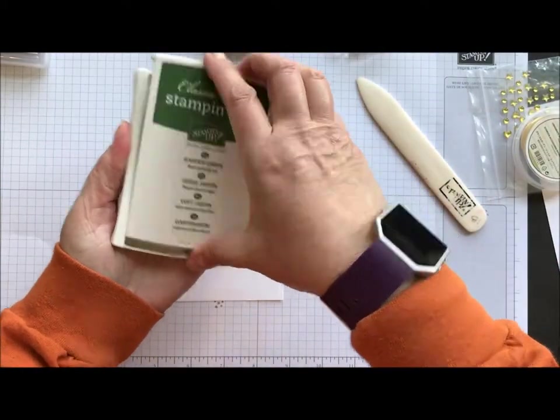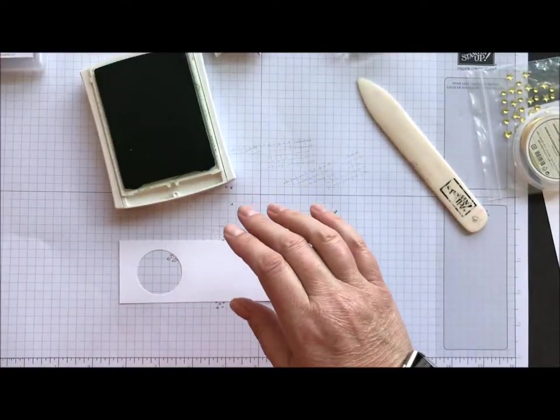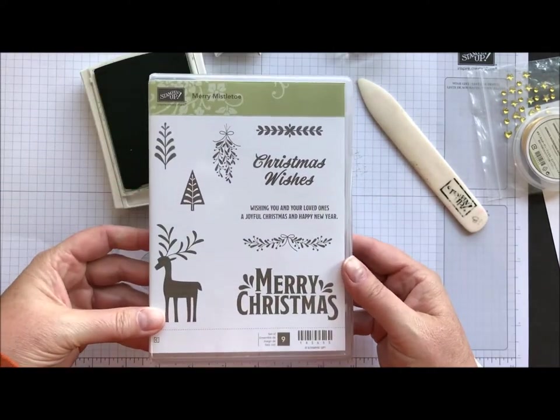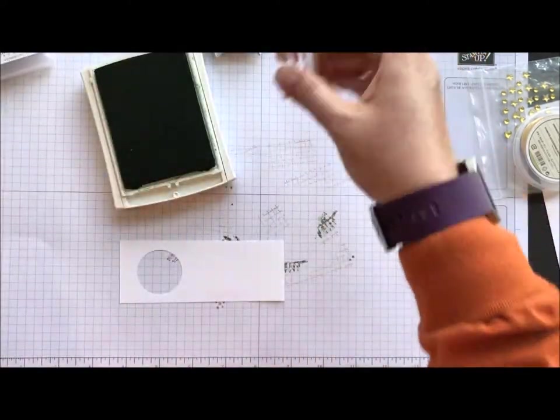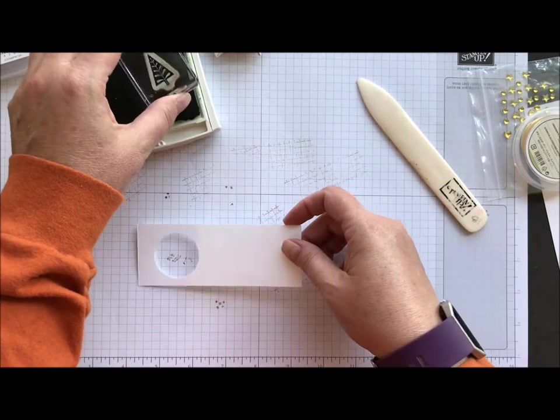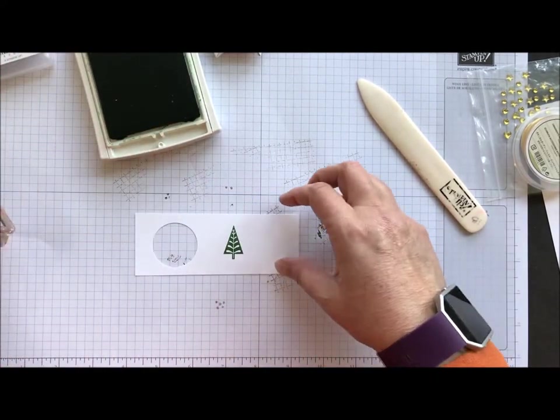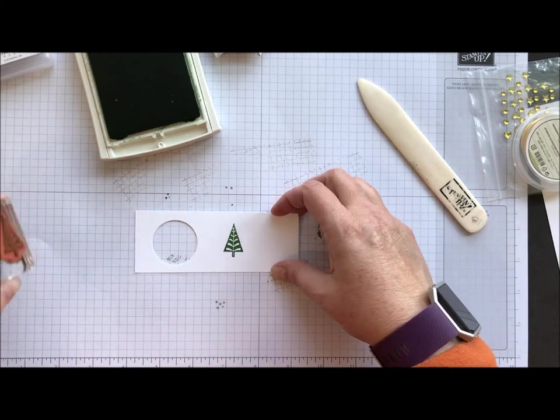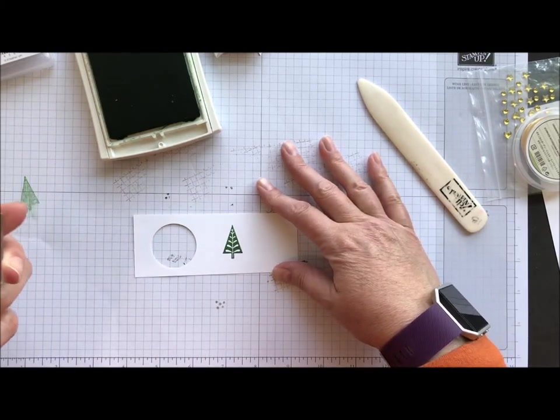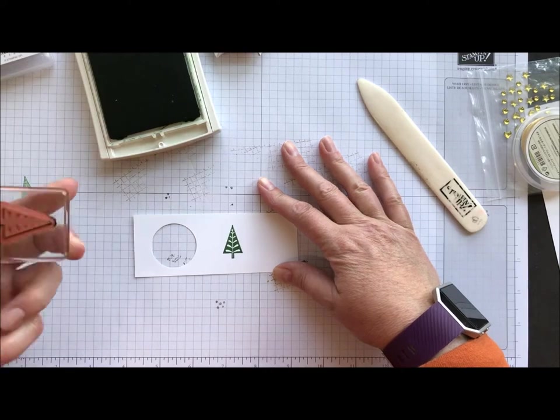Now I'm going to take Garden Green ink and I'm going to take the little tree from our Merry Mistletoe stamp set. This is in the annual catalog. That is one of our Christmas stamps in the bigger catalog, not the holiday catalog. Something's on my stamp. It's a hair. Dog hair, party foul.